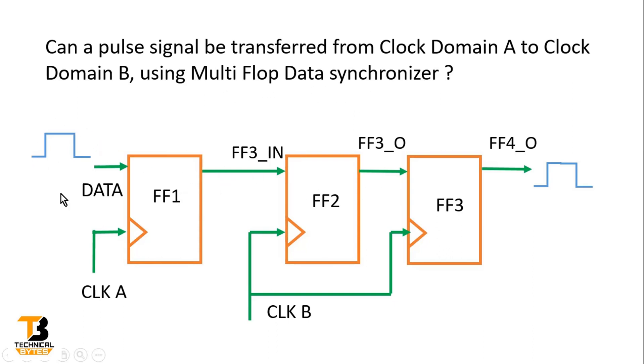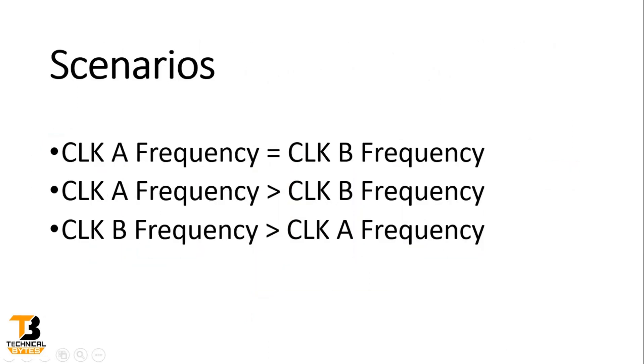Here I have one pulse in Clock Domain A that I want to transfer to the logic which is working in Clock Domain B. Friends, to answer this question, you can consider three scenarios. The first scenario is when Clock A frequency equals Clock B frequency. Second scenario is when Clock A frequency is greater than Clock B frequency. And the last scenario is when Clock B frequency is greater than Clock A frequency.